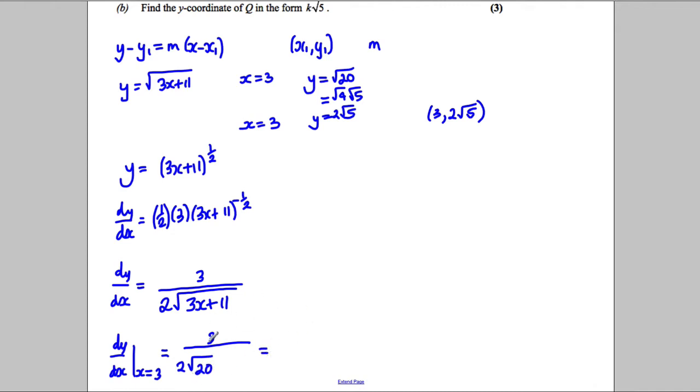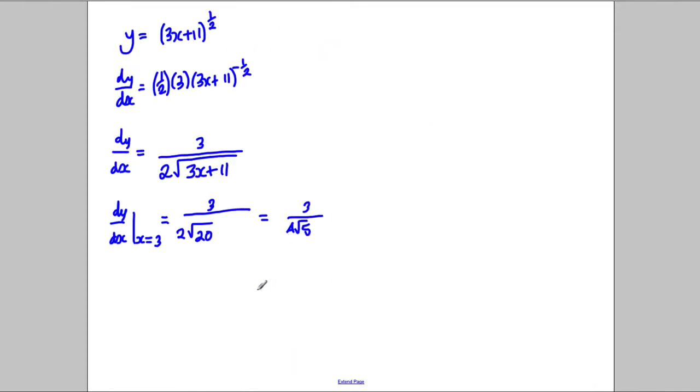And we'd rationalize that, so we'd multiply on top and bottom by root 20. Actually, this would be 3 over root 20, we already said 2 root 5, so this would be 4 root 5. And we'd multiply on top and bottom by root 5, so we'd get 3√5 over 20.